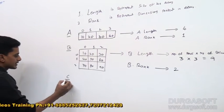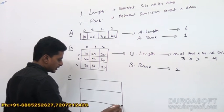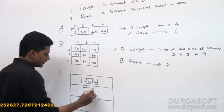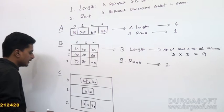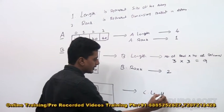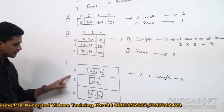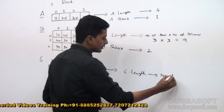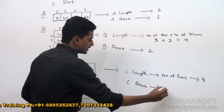Let us consider one more array named C, this time a jagged array. A jagged array means an array that contains one or more arrays within it — an array of arrays. For C.Length, the length of a jagged array is the number of rows. Here there are 3 rows (index 0, 1, 2), so C.Length is 3. C.Rank is always 1.